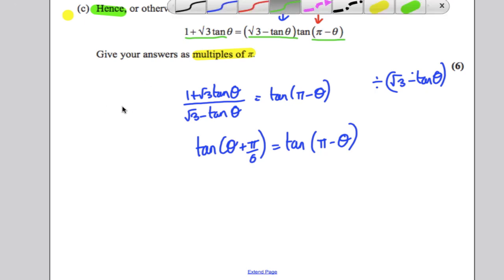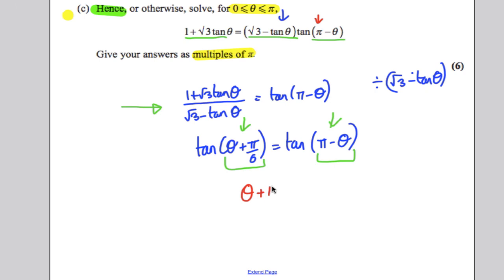Now, at this stage, many students try to expand this using the addition formula and get a quadratic with tans, and they got the right answer, and well done to them. But it was way easier than that, because if tan of something is equal to tan of something else, well, one thing you know for sure is that one of the solutions to that would be if both brackets are the same. So one solution to this would be theta plus pi by 6 must equal pi subtract theta.